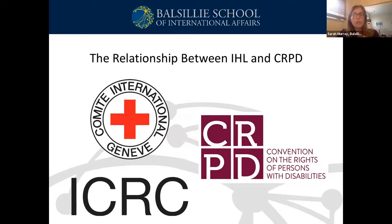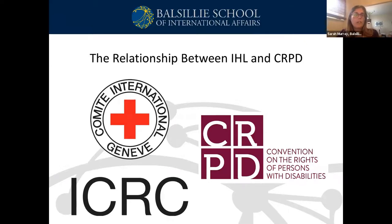IHL also contains specific obligations equivalent to the CRPD obligations related to mobility and availability of assistive technologies for prisoners of war and civilians. Any apparatus needed for the maintenance of good health is supposed to be supplied to people with disabilities free of charge. These rules can also be considered as IHL equivalents to the CRPD obligations on positive discrimination and accessibility.